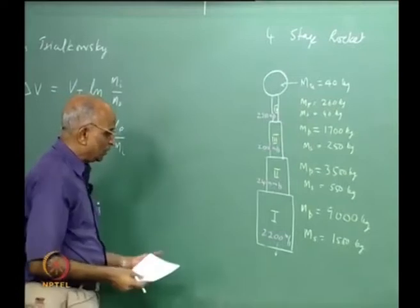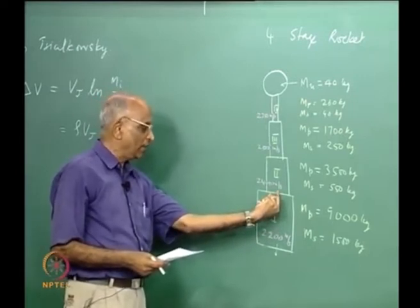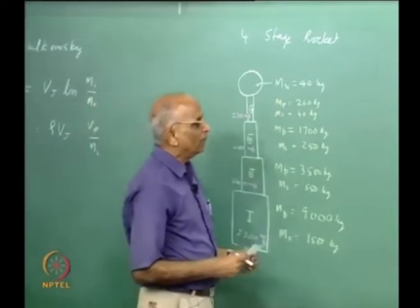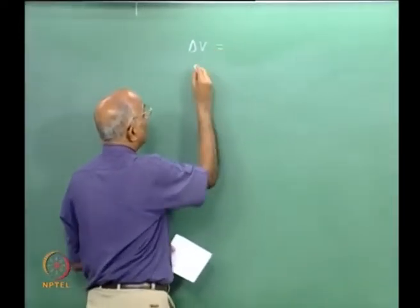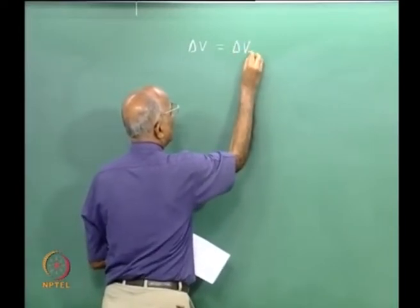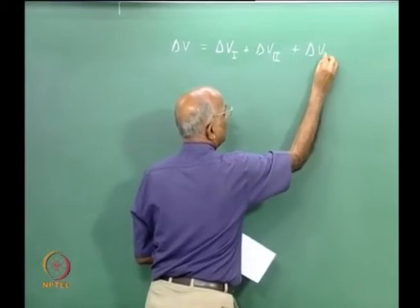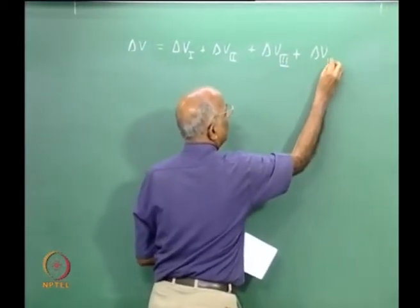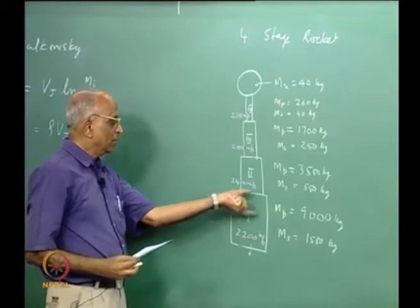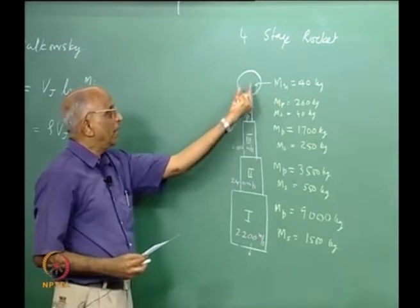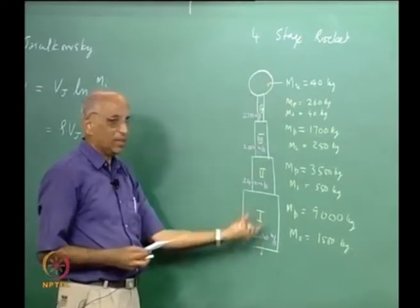We have staging: first stage, second stage, third stage, fourth stage. If the first stage gives a velocity increment delta V1, that is available when the second stage starts. Therefore, by summing up stages 1, 2, 3, and 4, the net ideal velocity of the rocket equals what is provided by the first stage plus the second stage plus the third stage plus the fourth stage. My main effort is to find delta V for each stage and arithmetically add them up.